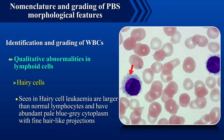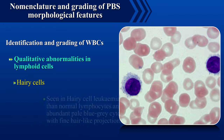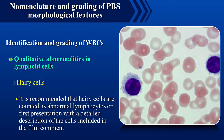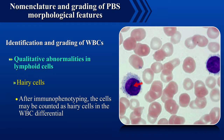Hairy cells are seen in hairy cell leukemia. They are larger than normal lymphocytes and have abundant pale blue to grey cytoplasm with fine hair-like projections. The nucleus varies in shape and may be round, oval, bean-shaped, or bilobed. It is recommended that hairy cells are counted as abnormal lymphocytes on first presentation with a detailed description included in the film comment. After immunophenotyping, the cells may be counted as hairy cells in the WBC differential.